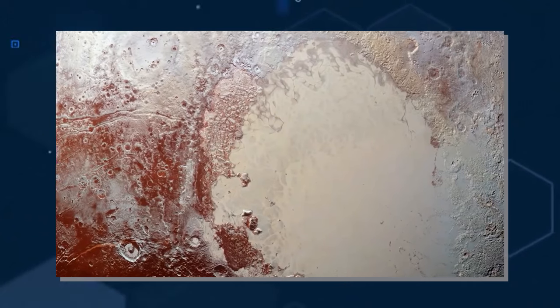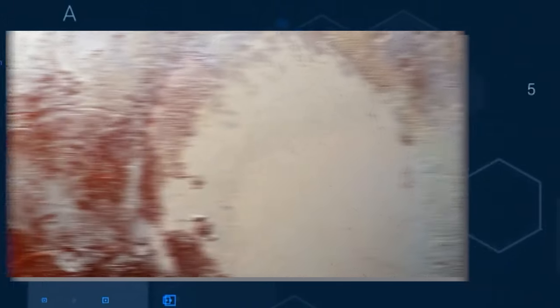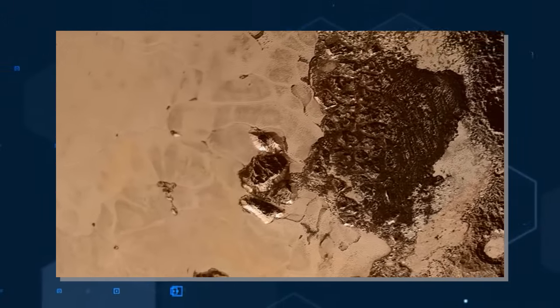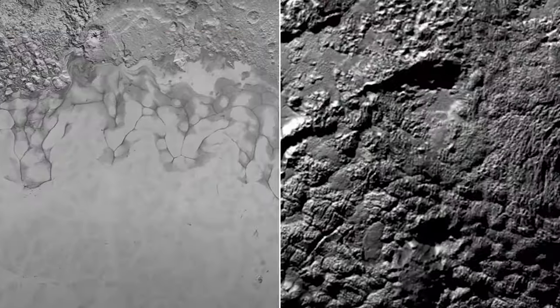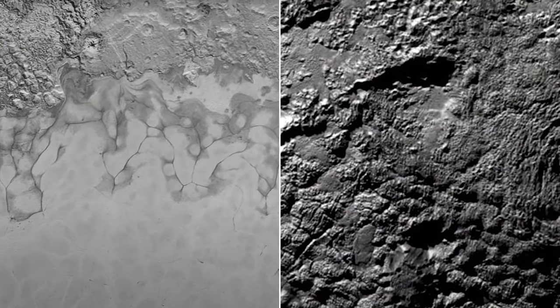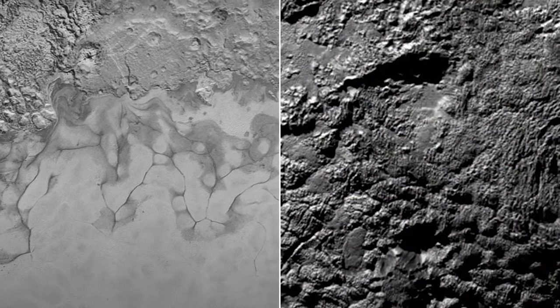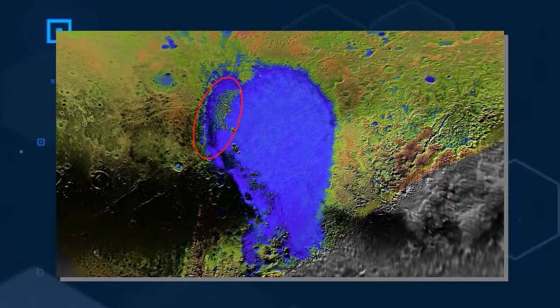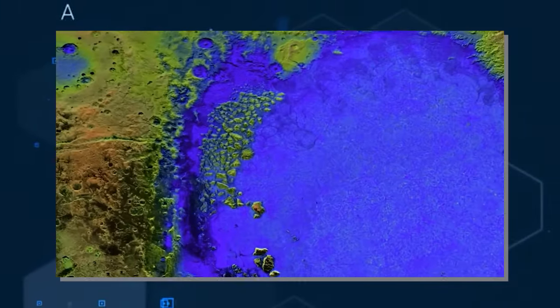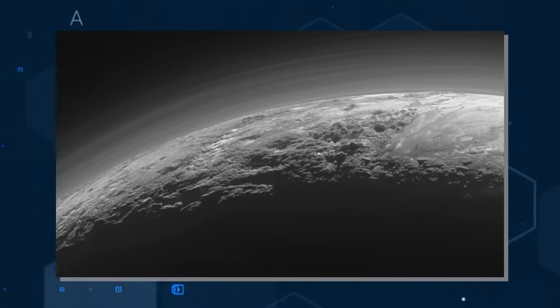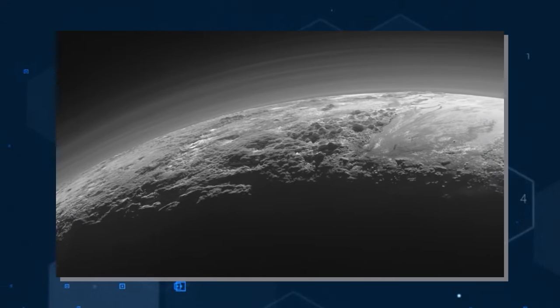In the eastern expanse of Tombaugh Regio, the terrain takes on a darker hue and is marked by a profusion of craters, indicative of its considerably greater age compared to Sputnik Planitia. Continuing eastward along the equator, a chain of extensive dark spots, each spanning hundreds of kilometers in diameter, comes into view.